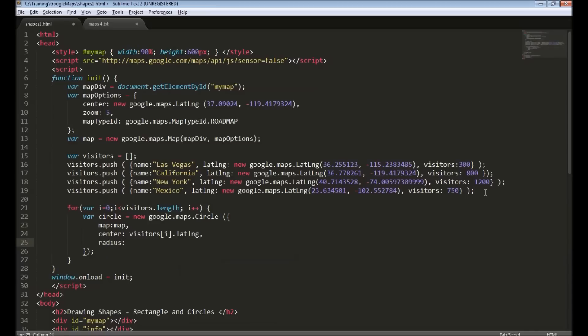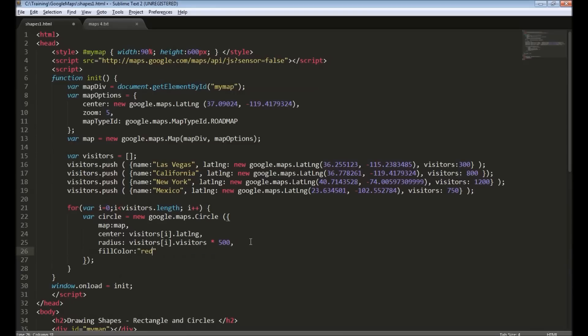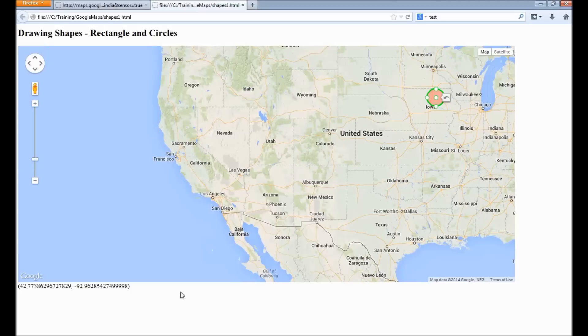Radius is specified depending on the number of visitors we have. I will say visitors[i].visitors times 500. This is because the radius is always in unit of meters. I will specify some fill color, say red. And I reload the page.